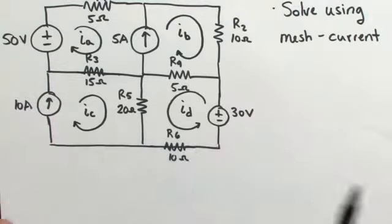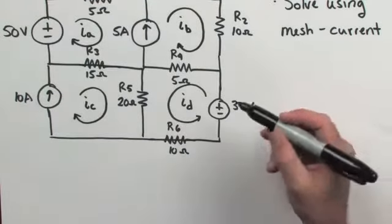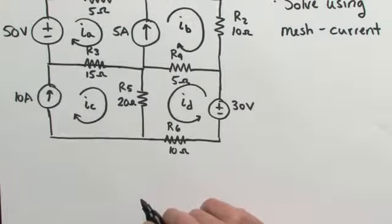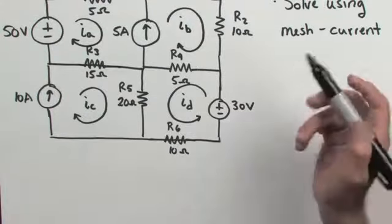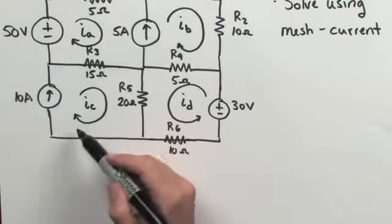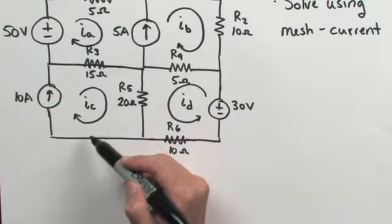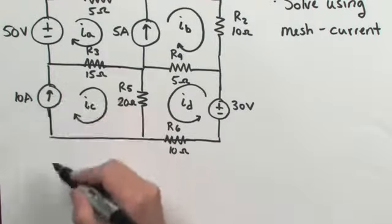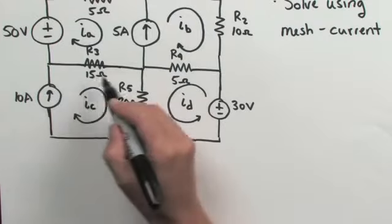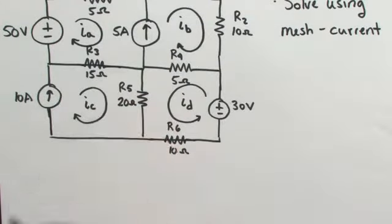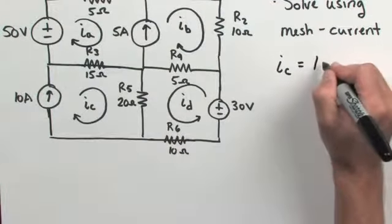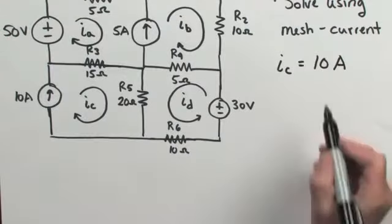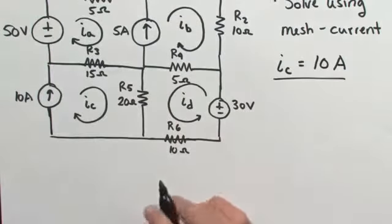Remember that these are arbitrary direction assignments, and if we assumed an incorrect direction, it will show up when we do our calculations. We have four meshes, so from the mesh current method we should need four independent equations. But if we look closer, we see that we already know the current that flows through mesh I sub C, because the only mesh current that flows through that 10 amp current supply is I sub C. So we can say that the current through mesh C equals 10 amps, reducing our equations from four down to three.